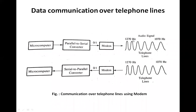These audio frequencies are transmitted over the telephone lines. At the answering (receiving) end, the audio frequencies are converted back into zeros and ones, and the serial bits are converted into a parallel word readable by the microcomputer. When the answering end needs to transmit, it uses different frequencies: 2025 Hz for space and 2225 Hz for mark.